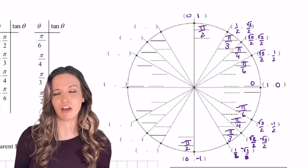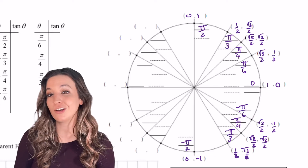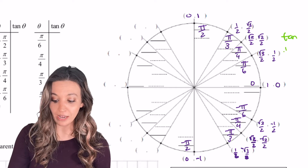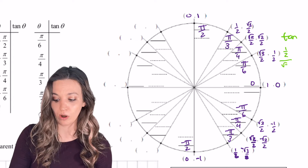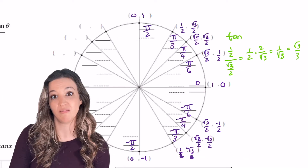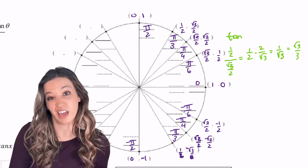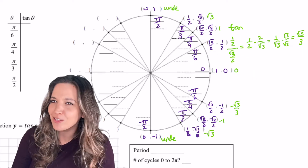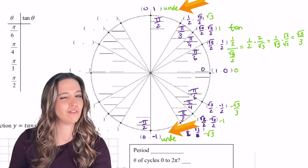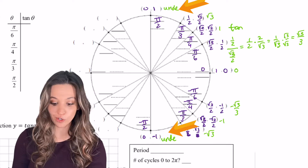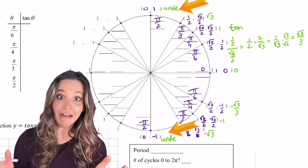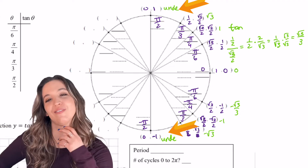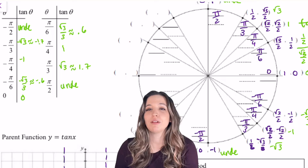Now for the tangent values. Remember tangent is sine over cosine. So when I go do my tangent at pi over 6, I'm going to do 1/2 divided by square root 3 over 2. Multiply by the reciprocal and I'm going to get root 3 over 3. Check those tangent values. Really pay close attention to pi over 2 and negative pi over 2 — sine over cosine is 1 divided by 0. Thou shall not divide by 0, so they're undefined values right there.